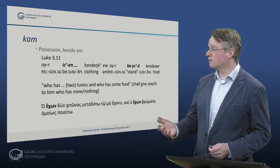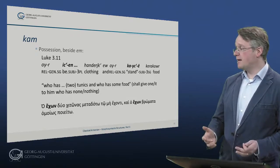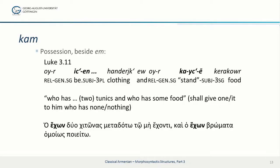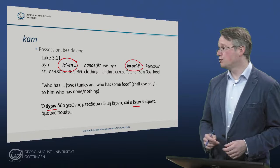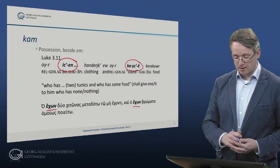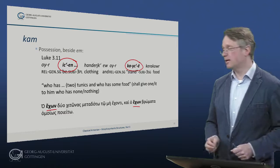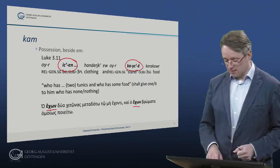For possession, there is a nice example where both 'em' and 'kam' appear next to each other: 'uiritsen,' the subjunctive of 'em,' and the verb 'stand' are both used to translate the Greek 'ekon,' the participle of 'to have.' So he who has two tunics and who has food should give to those who have nothing — two different verbs translating the same Greek element.